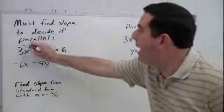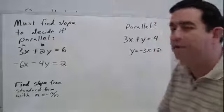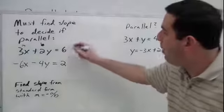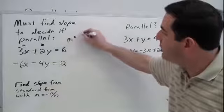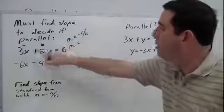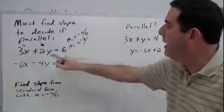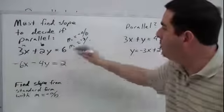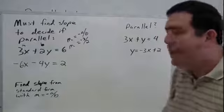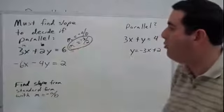Remember that a is the coefficient of the x and b is the coefficient of the y. So for the top equation, let's find our slope using negative a over b: opposite of the coefficient of the x — the opposite of 3 is negative 3 — divided by the coefficient of the y, which is 2. So negative 3 halves is the slope of the top line.